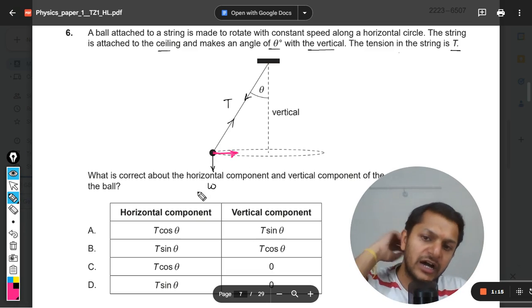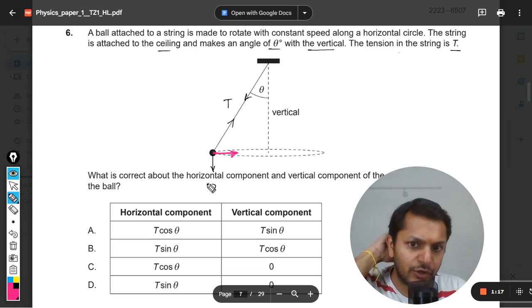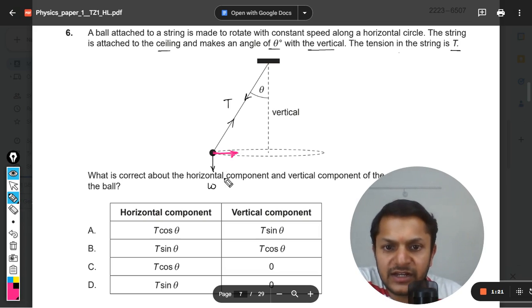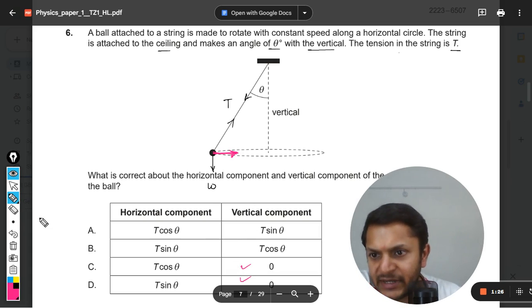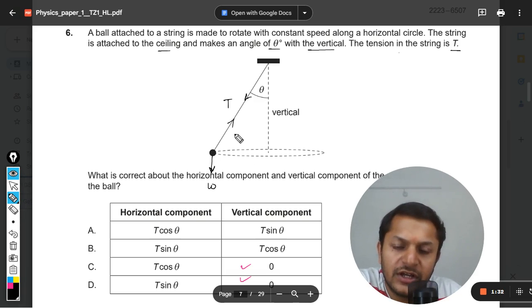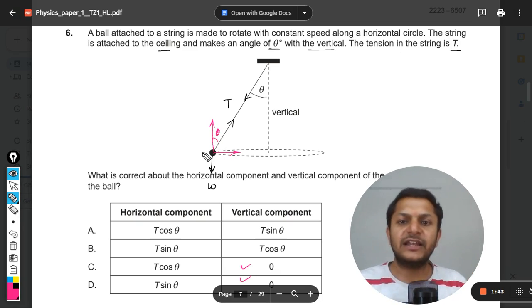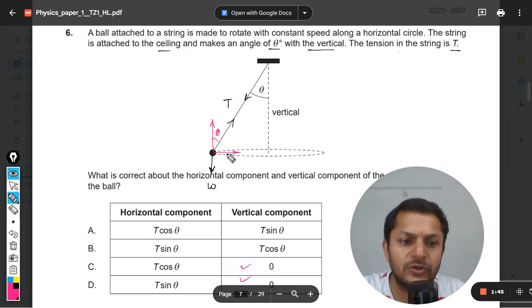But we want to find the component of this, like what is the horizontal component and the vertical. Obviously vertical is going to be zero clearly, but I have to show you what is happening here. Let us create the component of T first of all. One will be this, another will be this. This is theta, so this will be theta. These are alternate interior angles so both of these angles will be equal to each other.